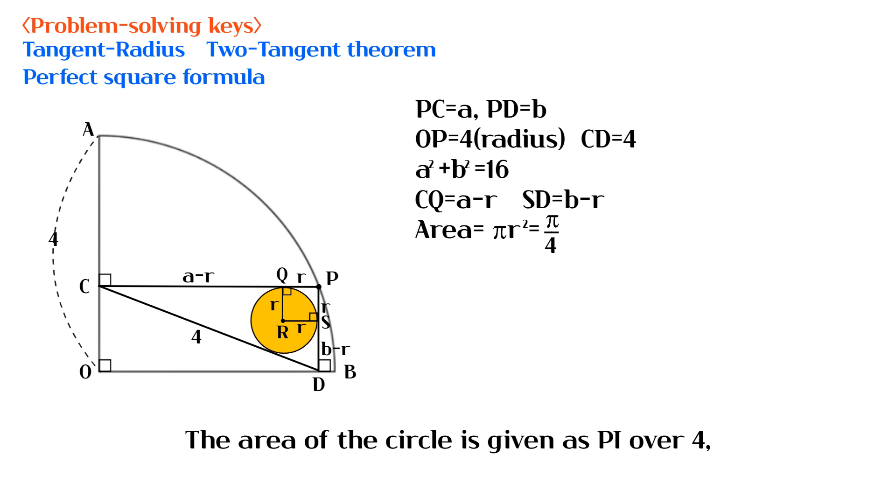The area of the circle is given as pi over 4, so the radius R is 1 half.